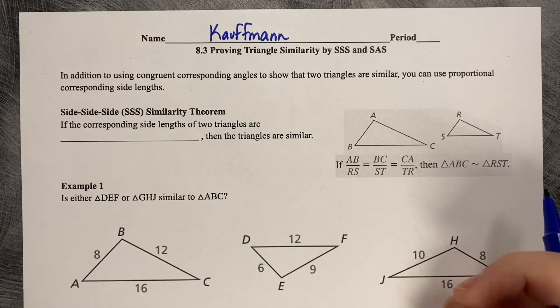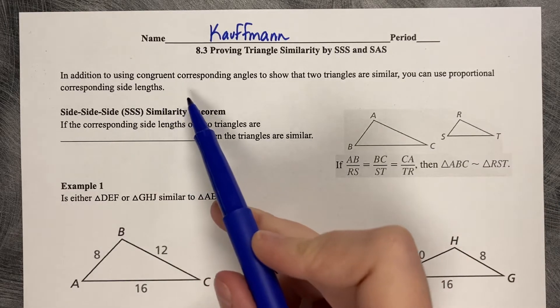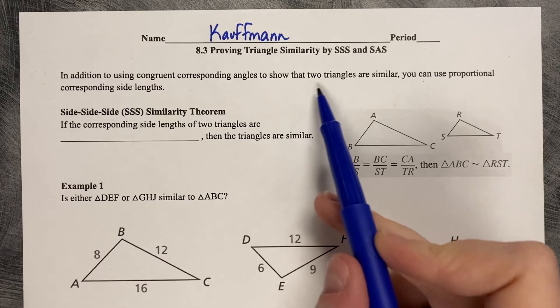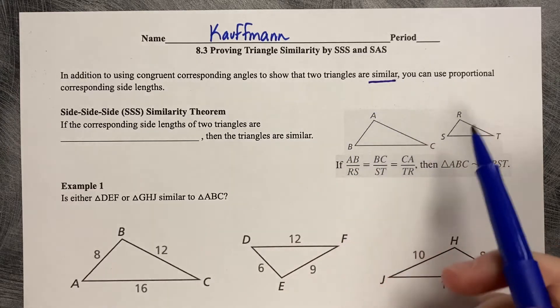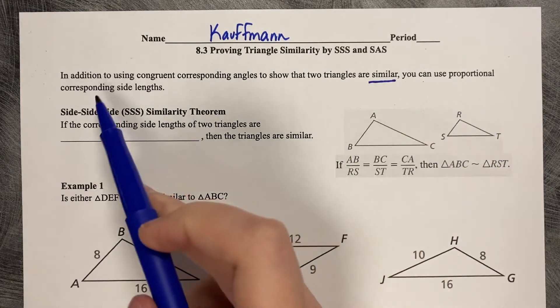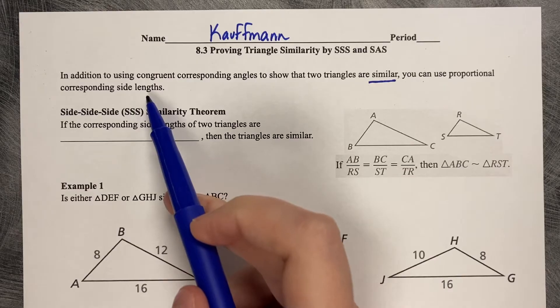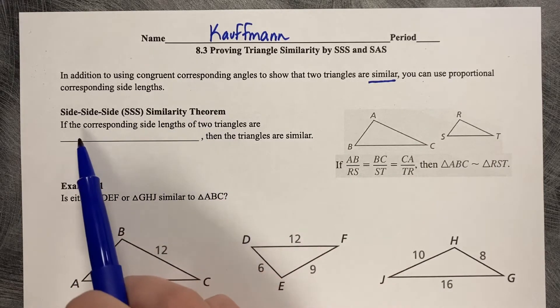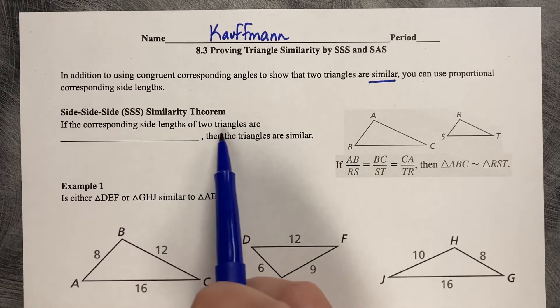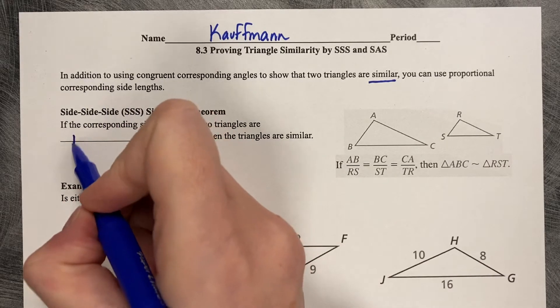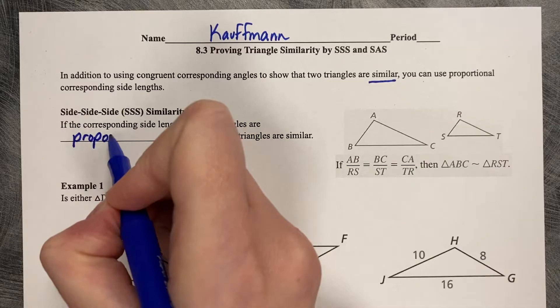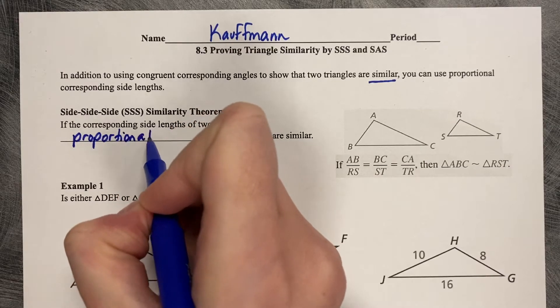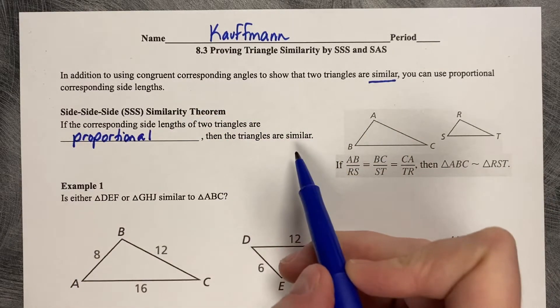8.3, Proving Triangle Similarity by SSS and SAS. In addition to using congruent corresponding angles to show that two triangles are similar, you can use proportional corresponding side lengths.